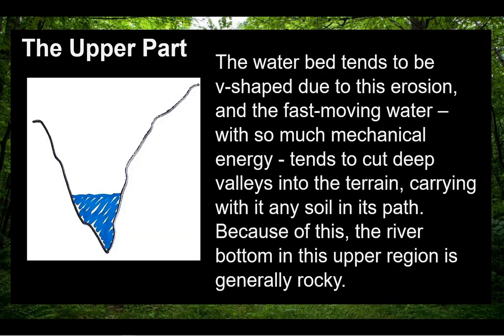The riverbed tends to be V-shaped due to this erosion. The fast-moving water, with so much mechanical energy, tends to cut deep valleys into the terrain, carrying with it any soil in its path. Because of this, the river bottom in this upper region is generally rocky.